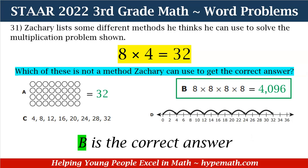The correct answer is B — 4,096. Why is that wrong? So eight times eight times eight times eight — the fact that we multiplied all of the eights is what makes this method incorrect. To make it correct, we need to change our multiplication signs to addition signs: eight plus eight plus eight plus eight is equal to 32. So yes, B is the correct answer. It was not the method Zachary could use.